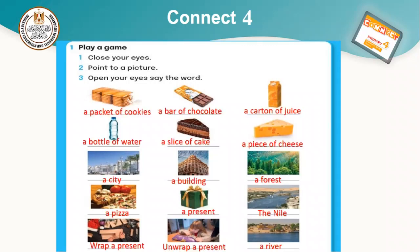We will say the first one: a packet of cookies. The second one: a bar of chocolate. The third one: a carton of juice. Then a bottle of water. Then a slice of cake. Then a piece of cheese.